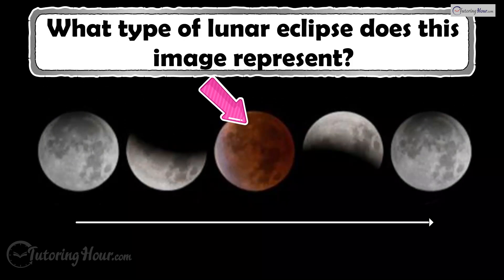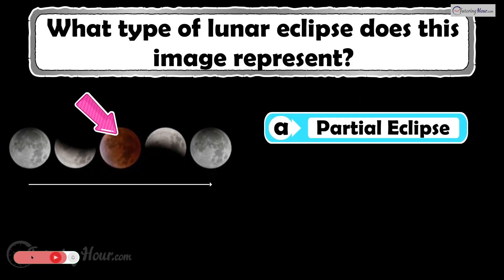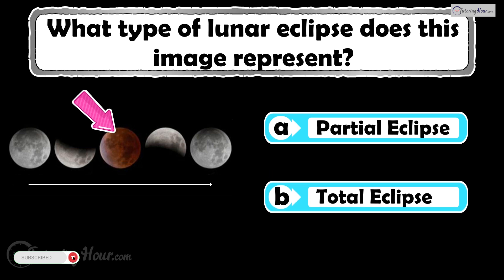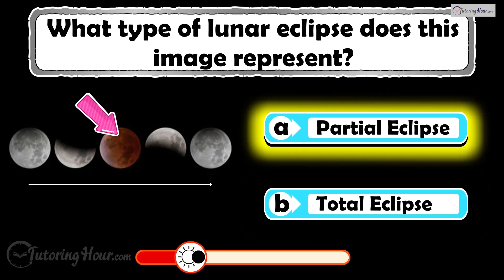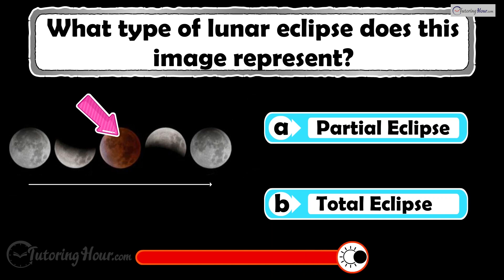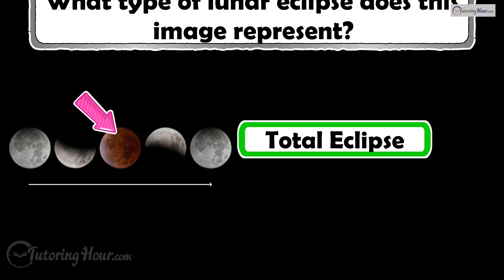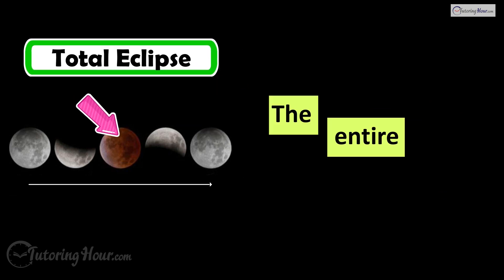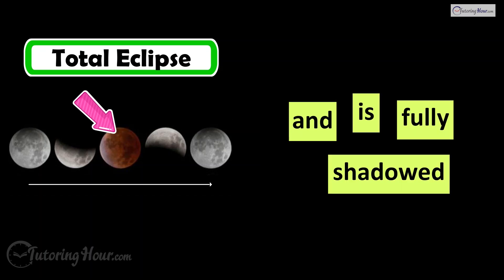What type of lunar eclipse does this image represent? Is it A, partial eclipse, or B, total eclipse? The correct answer is a total lunar eclipse. The entire moon passes through Earth's umbra and is fully shadowed.